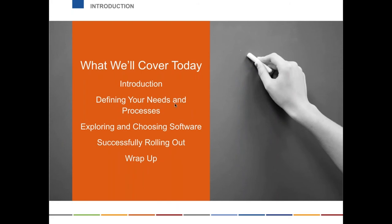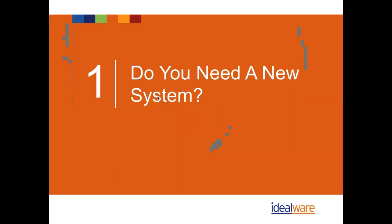Here's some things we'll cover today. We're going to look at your software needs, defining your needs and processes. We want to make sure that we do a lot of preparation in terms of thinking about what you're really facing as an organization, whether you're ready for making a selection for software, and is this the right move for you. Then we'll get into actually choosing the right software and some tips and strategies around the rollout once you've chosen it.